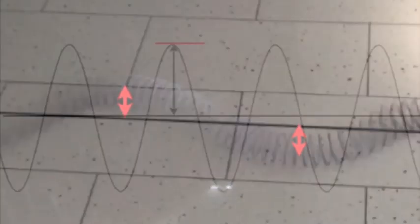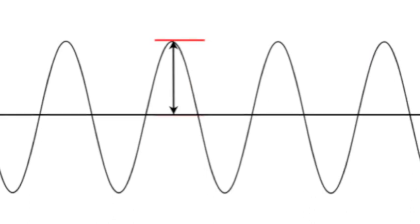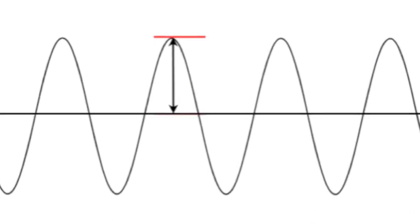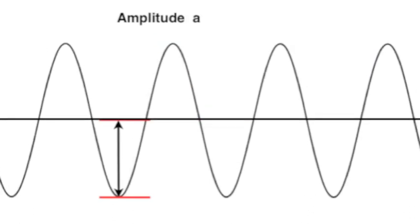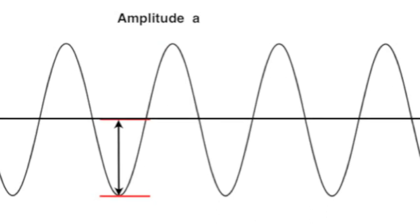The amplitude of a wave is a measure of how much energy it is carrying — for example, for light it would be how bright it is, or for sound it would be how loud it is. You can see here the amplitude measured on the slinky. The measurement is taken from the crest — the maximum position — to the centre rest point, or from the minimum position to the rest point. The amplitude is measured in metres.